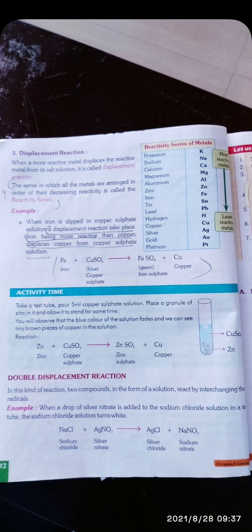Is mein do compounds hote hain. For example, hamne sodium chloride liya aur silver nitrate liya. Dono compound salt hai. Dono ka aqueous solution hum lete hain. Jab dono mein reaction karate hain, to reaction ke baad jo chlorine aur nitrate radicals hai, yeh negative radicals interchange ho jaate hain. Chlorine silver ke saath mein aur nitrate sodium ke saath mein aata hai. Is tarike se jo product banta hai, silver chloride aur sodium nitrate. So yaha par radical ka exchange hua, dono ne apne apne radicals